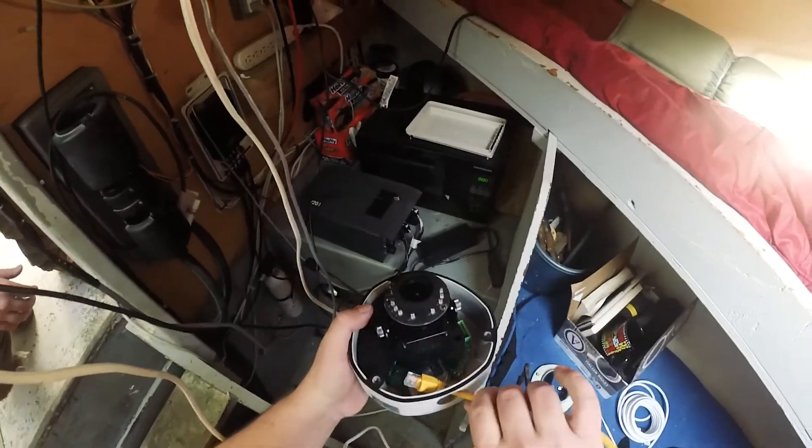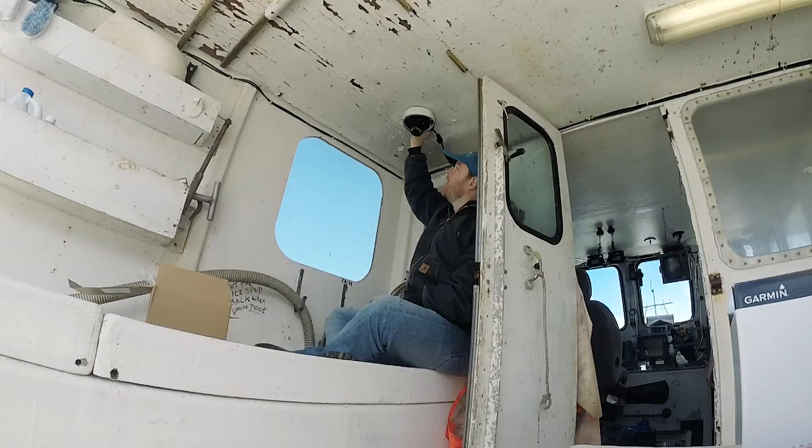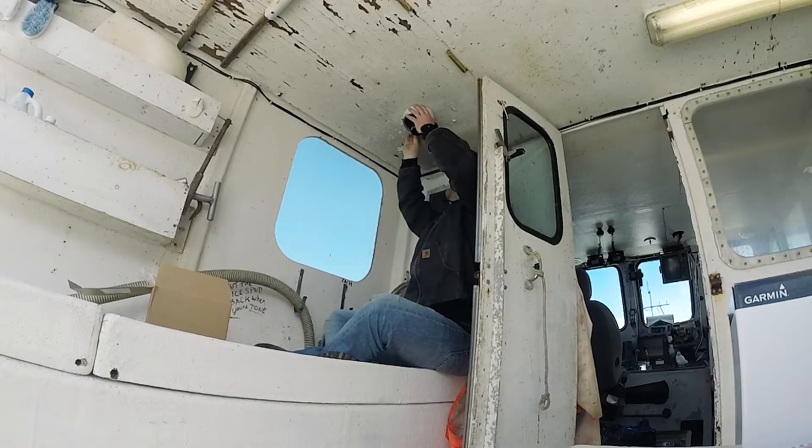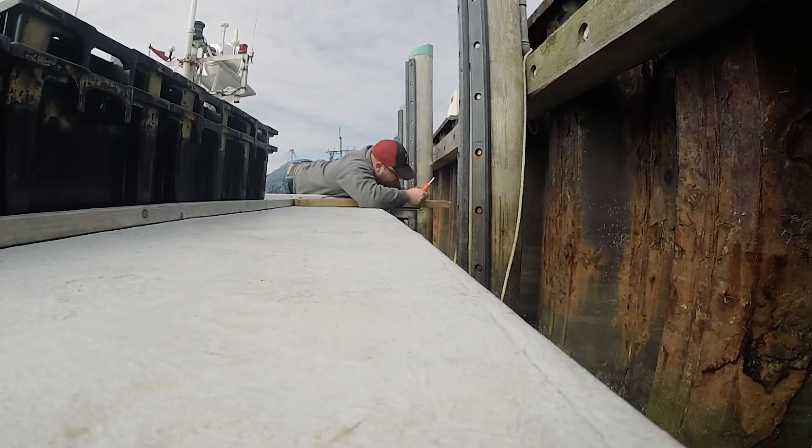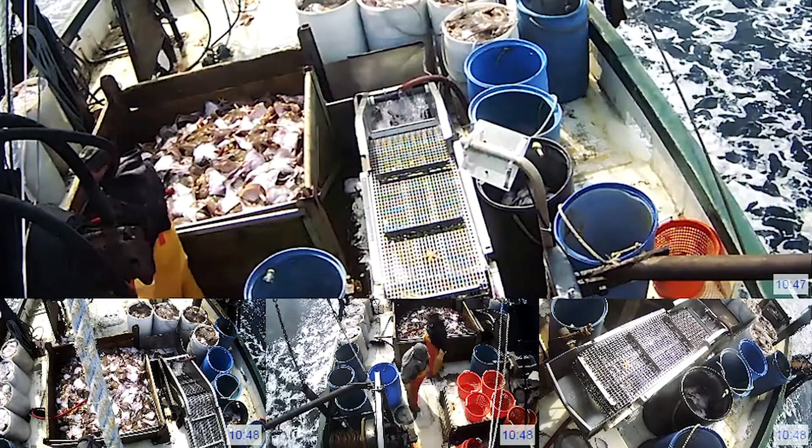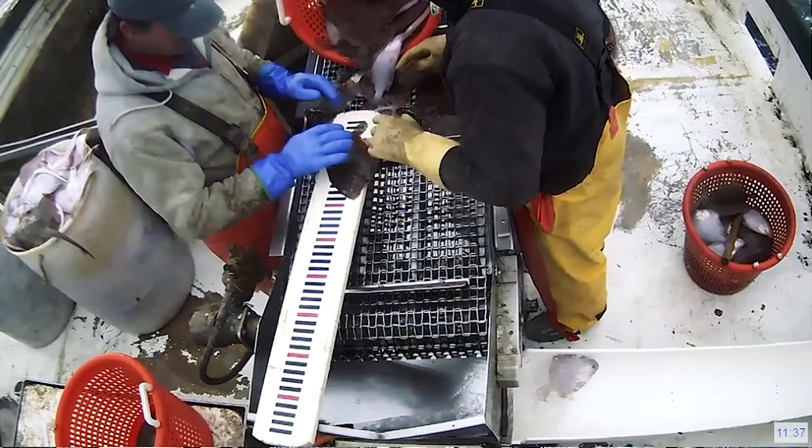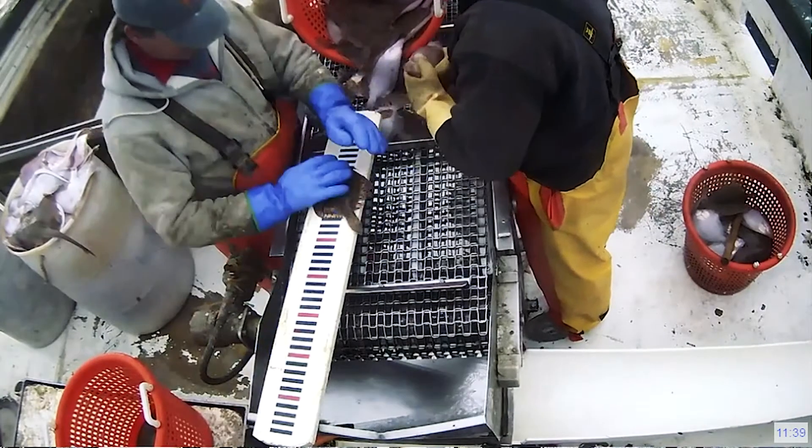Electronic monitoring is a series of cameras that we install on fishing boats. We angle these cameras at the deck of the boat to get a good view of the fish coming on board, the fish being handled, and the fish either being put in the fish hold or discarded overboard.